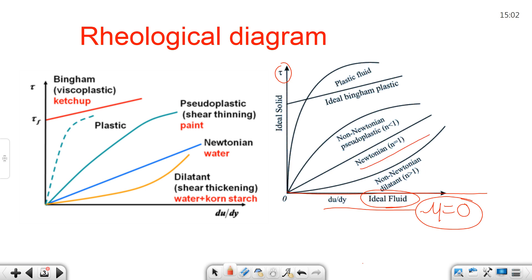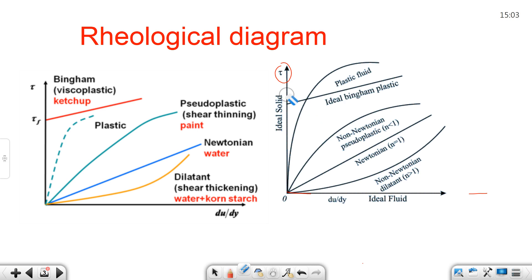So far we have covered Newtonian and ideal fluid. Next category is non-Newtonian fluids. The first two are dilatant and pseudoplastic fluids. Both are non-Newtonian, but the difference lies in the nature of their curves. For dilatant fluid, the fluid behavior index n is greater than 1, whereas for pseudoplastic fluid, n is less than 1.